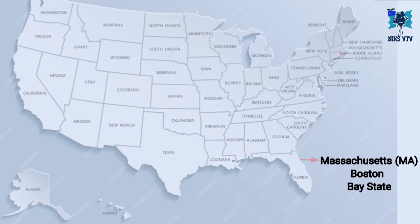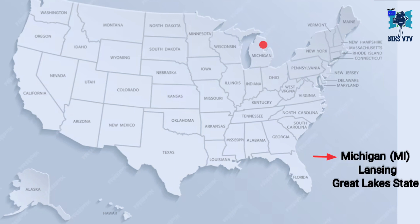Next state is Massachusetts, its abbreviation is MA, its capital is Boston, its time zone is EST, and its nickname is Bay State. Next state is Michigan, its abbreviation is MI, its capital is Lansing, its time zone is EST, and its nickname is Great Lakes State.